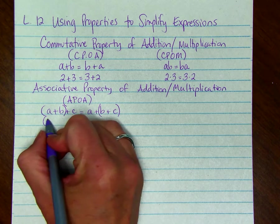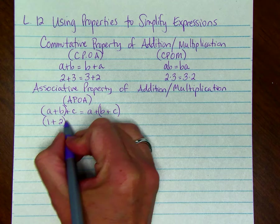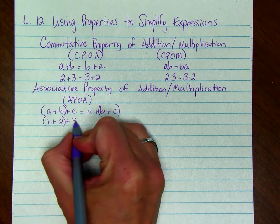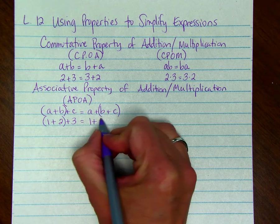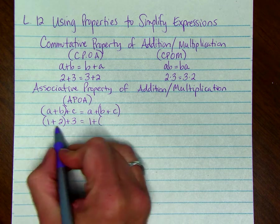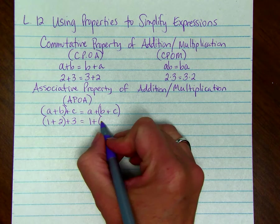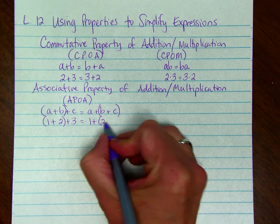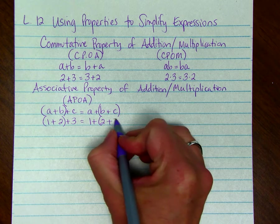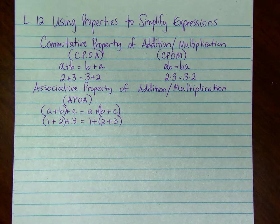Here's an example. If A is 1, B is 2, and C is 3, then we can say 1 plus 2, if we add that first and then 3, it's going to equal the same thing as if we add 2 plus 3 first and then 1.